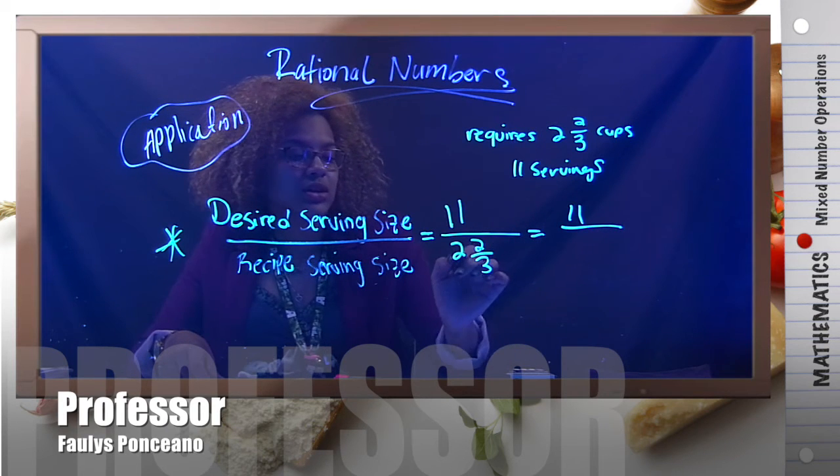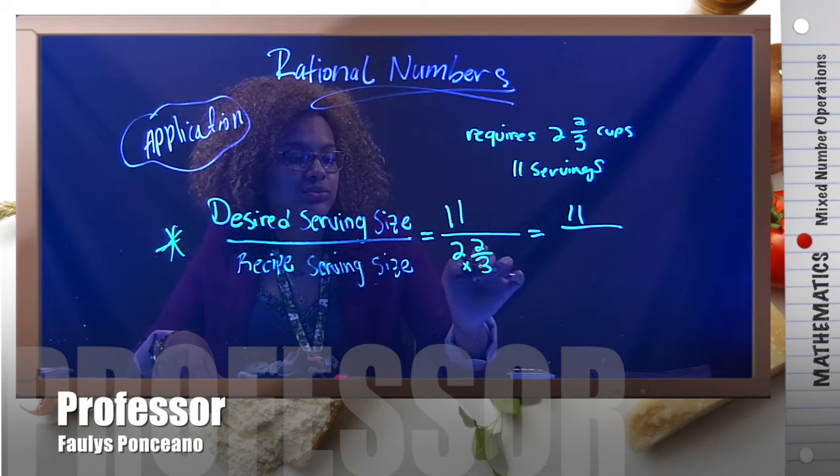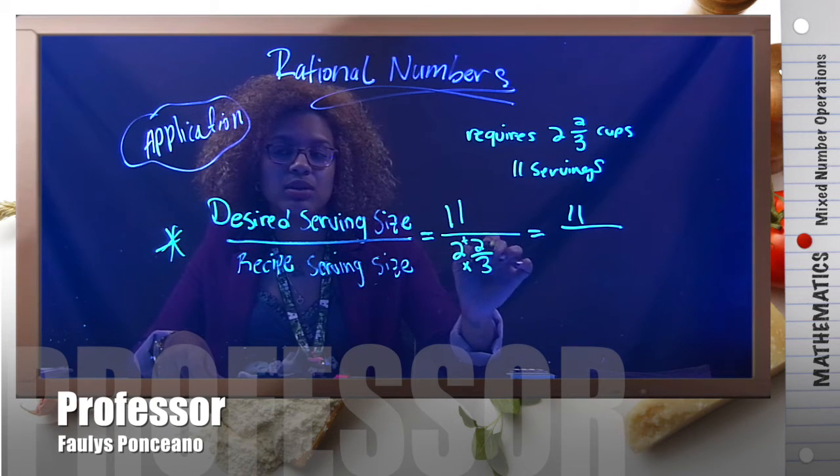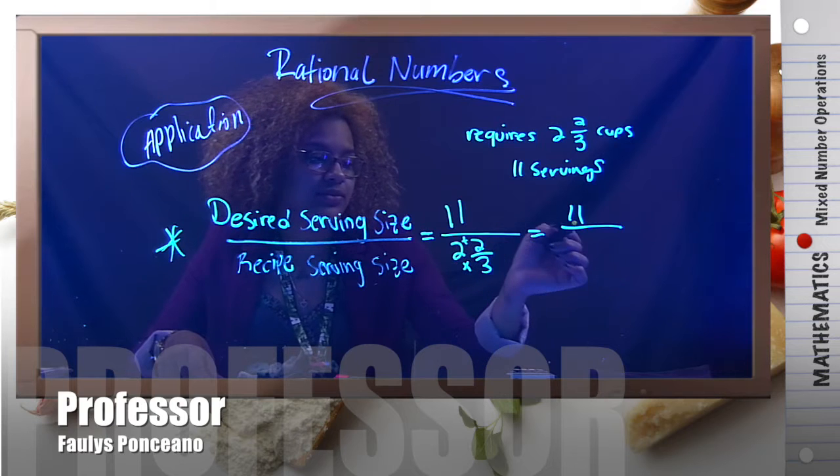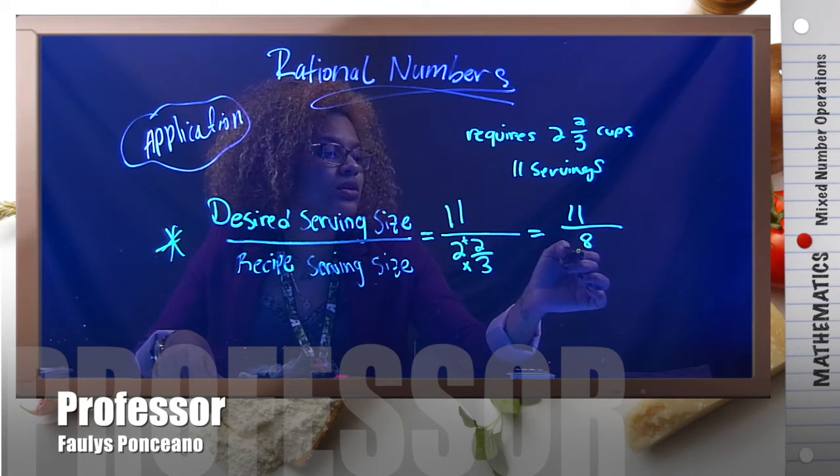11 stays. Let's convert this to an improper fraction. Two times three plus two gives you eight over three.